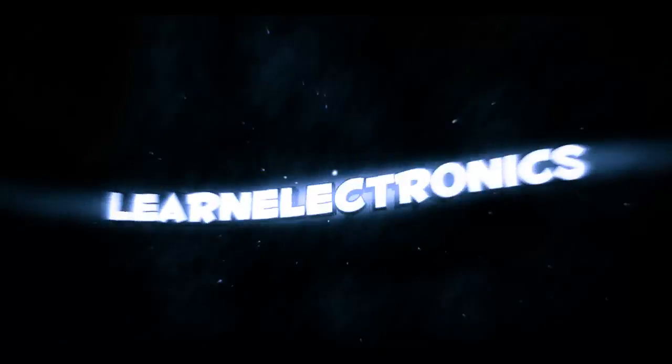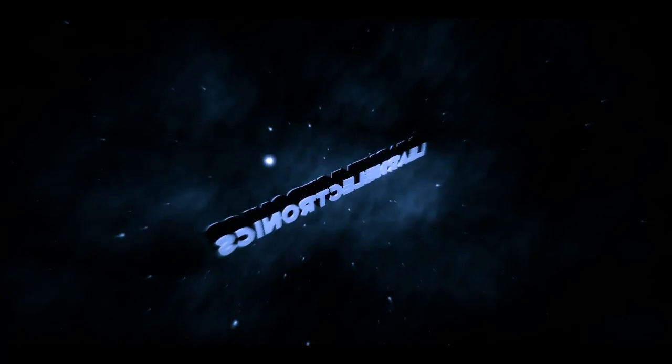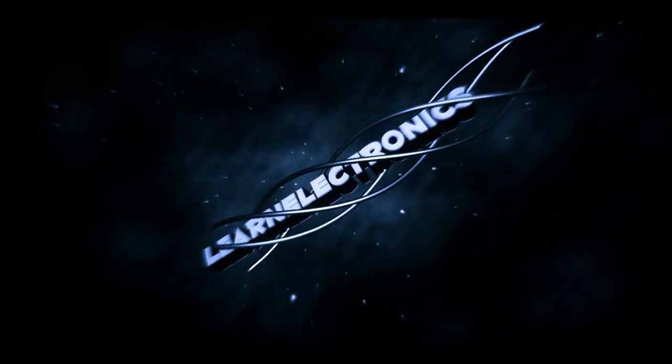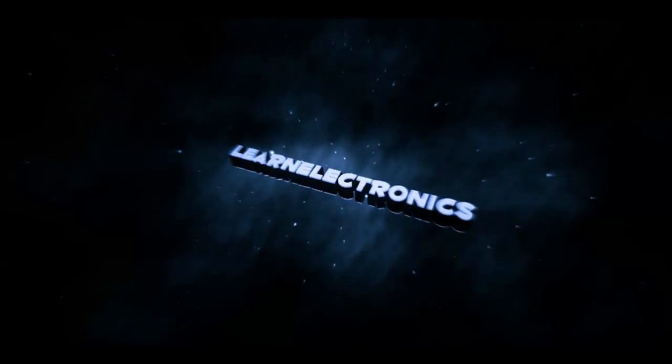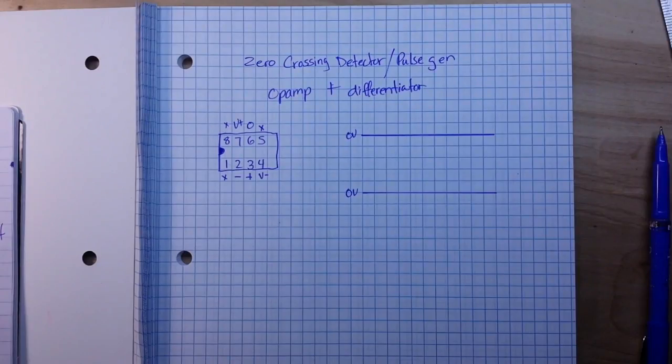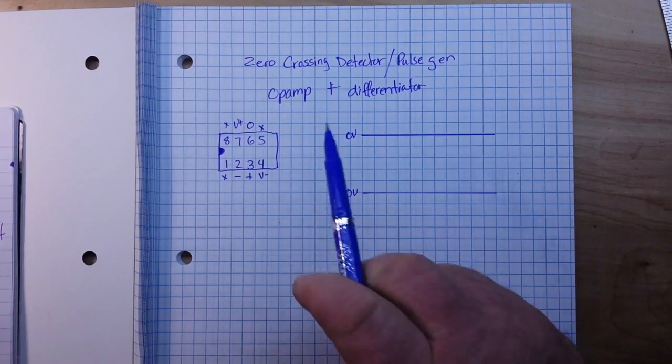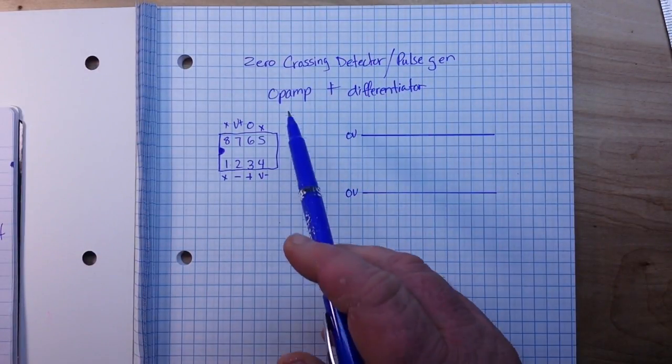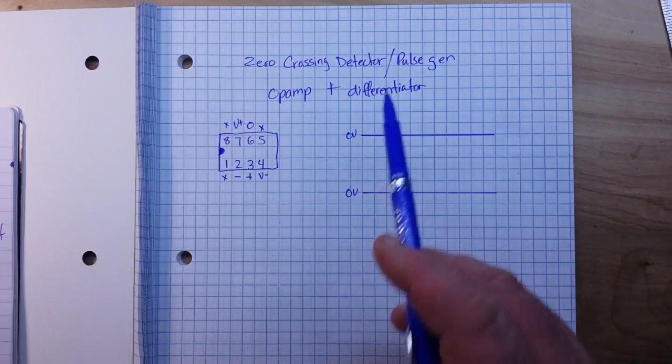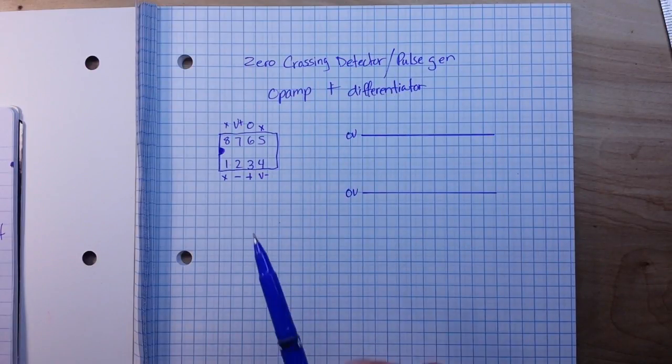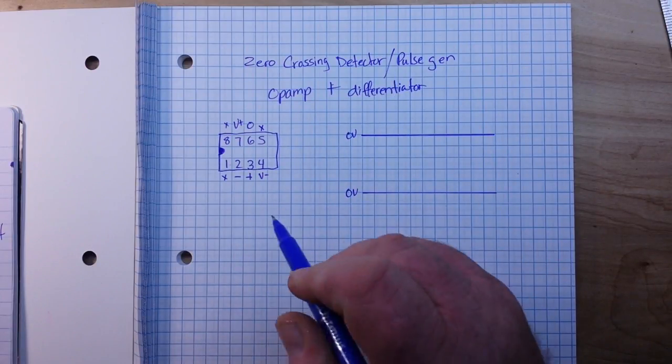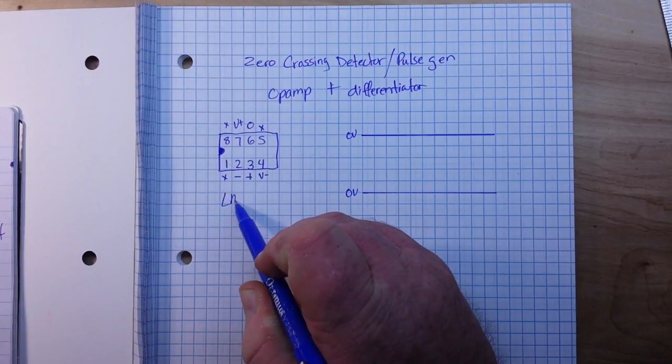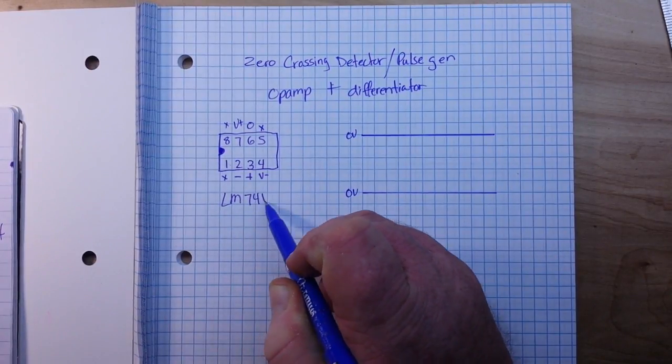Hey what's happening guys, today we are going to make a zero crossing detector slash pulse generator using an op amp and a differentiator. Now the op amp that we're going to be using for today is the LM741, probably the most common op amp in the world.